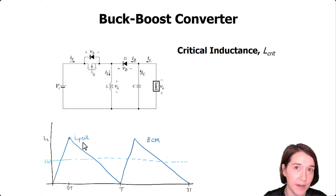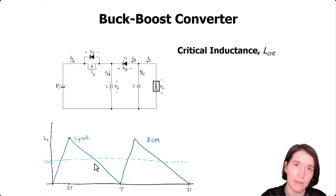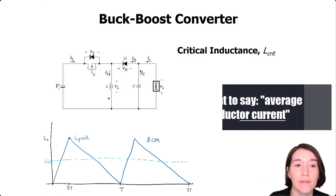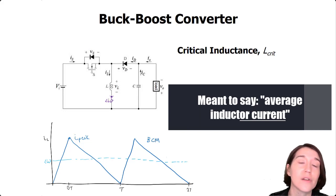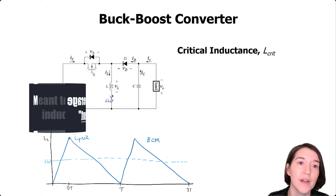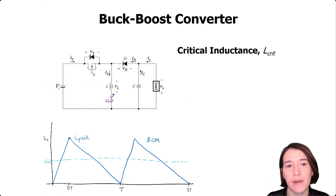To calculate this peak value we need to know the average inductor current. Let's look at the schematic to understand. We'd like to figure out the average current going through the inductor, and to do that we need to use Kirchhoff's current law to figure out what currents are going into it.